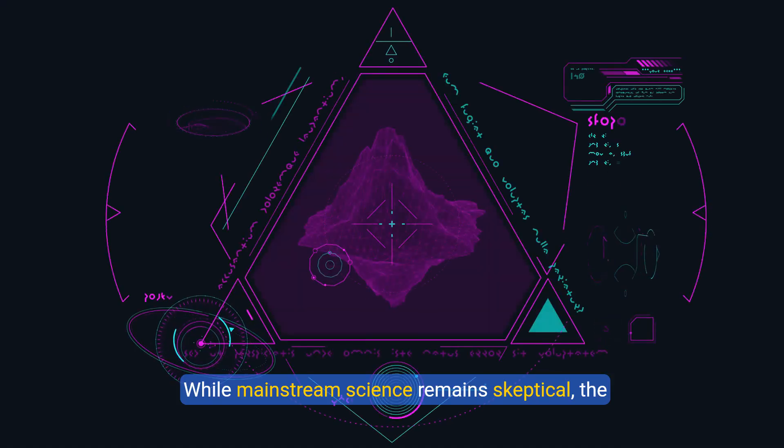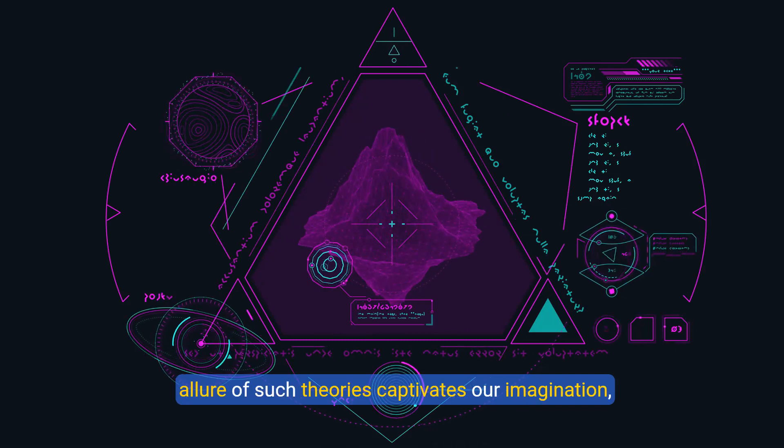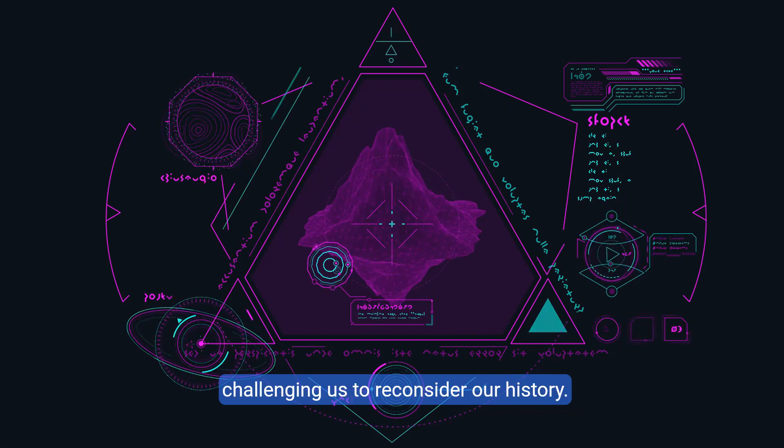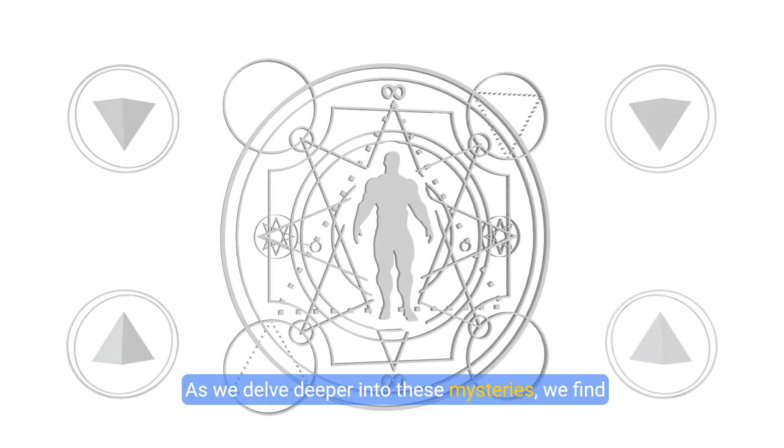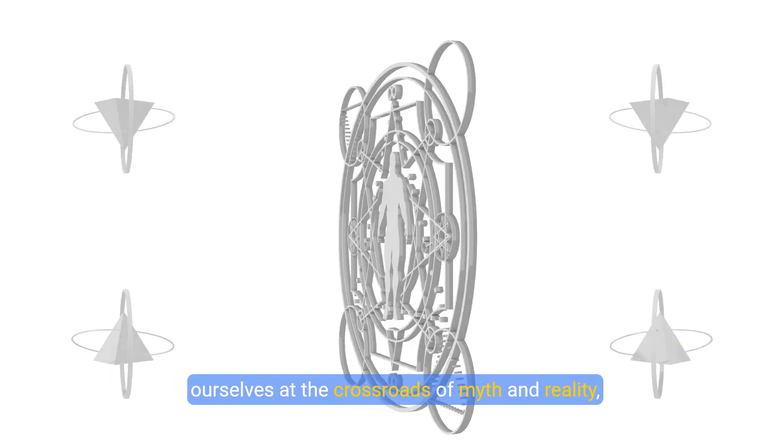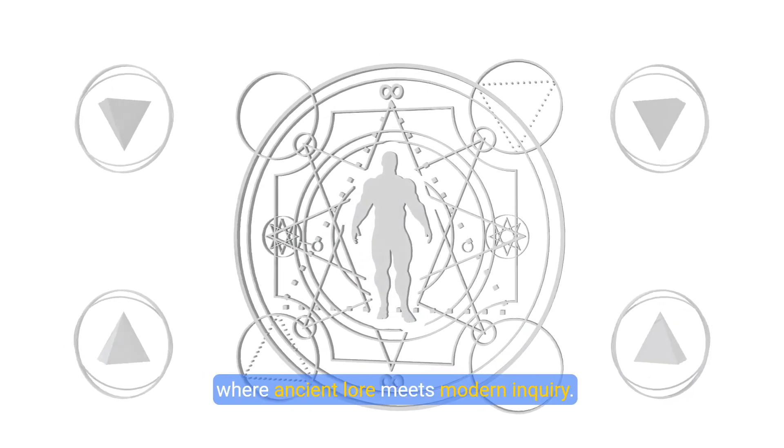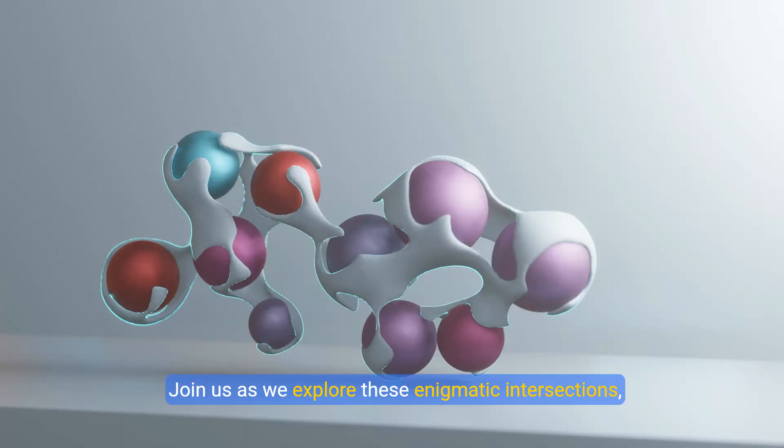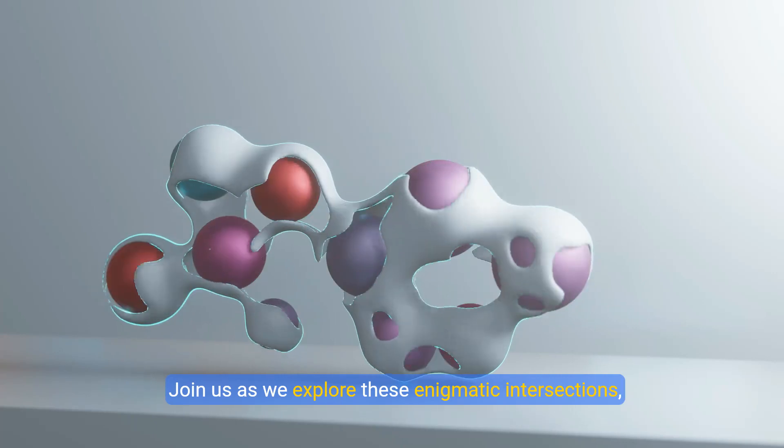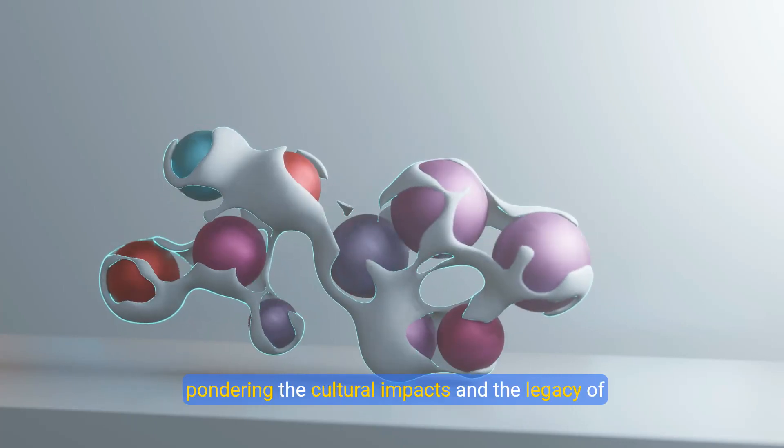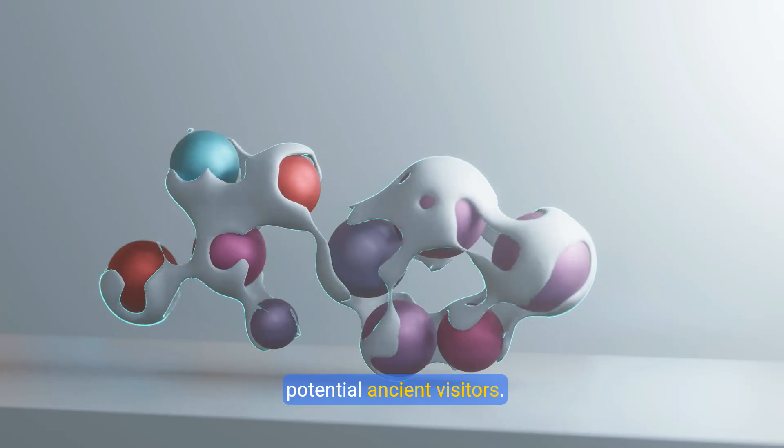Ancient texts and art often depict beings descending from the skies, raising speculation about alien influences on human development. While mainstream science remains skeptical, the allure of such theories captivates our imagination, challenging us to reconsider our history. As we delve deeper into these mysteries, we find ourselves at the crossroads of myth and reality, where ancient lore meets modern lore.